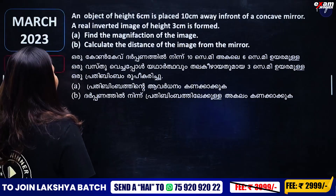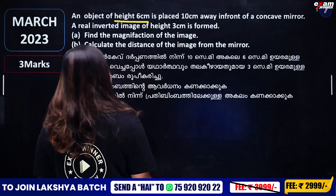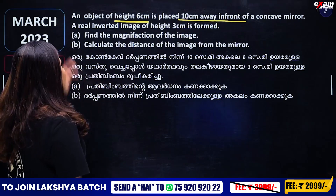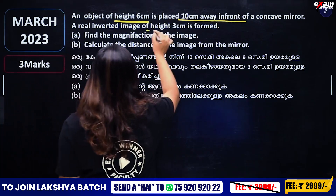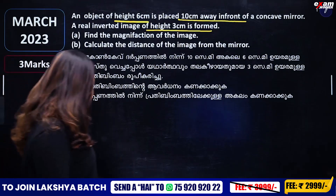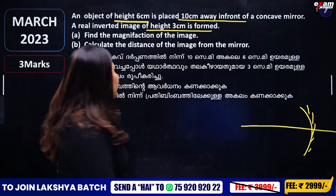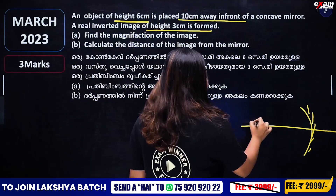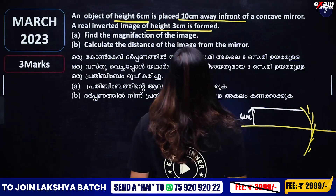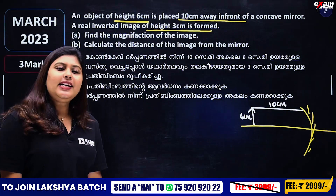What is the third question? An object of height 6 cm is placed 10 cm in front of a concave mirror. A real inverted image of height 3 cm is formed. It is a concave mirror. The object height is 6 cm and the mirror distance is 18 cm, with an inverted image of 3 cm.